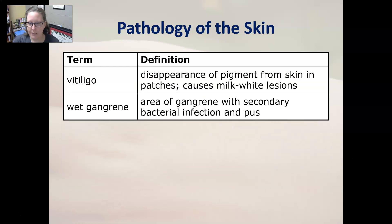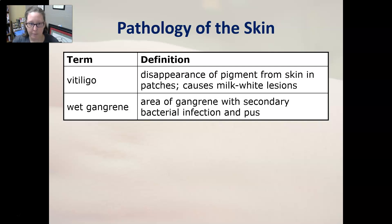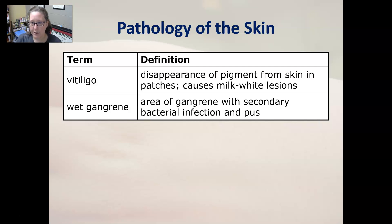Vitiligo is a disappearance of pigment from the skin in patches, causing milk-white lesions on the skin. Wet gangrene is an area of gangrene with a secondary bacterial infection and pus, and it precedes the dry gangrene discussed earlier.